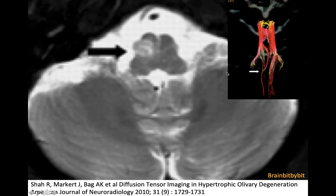If there is denervation of the inferior olivary nucleus, after a few months it becomes larger and hypertrophied. Every radiology book says: don't mistake this for a tumor.